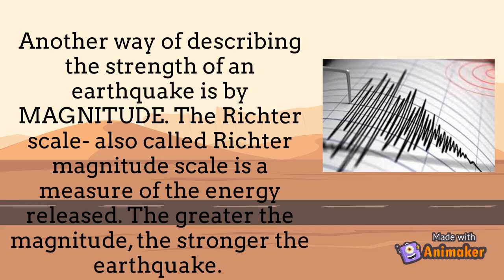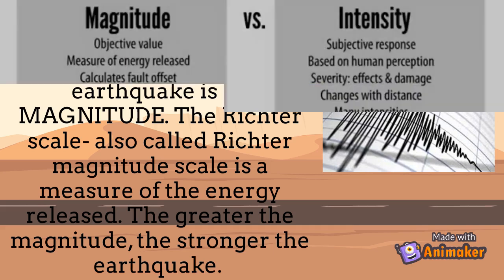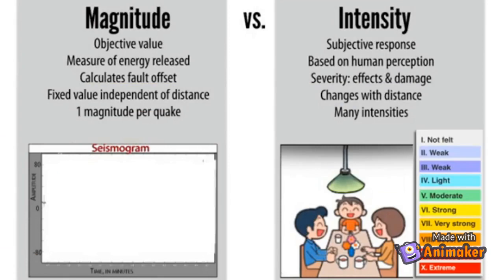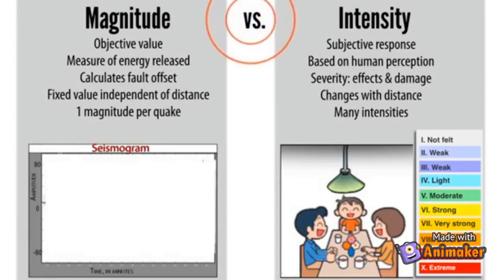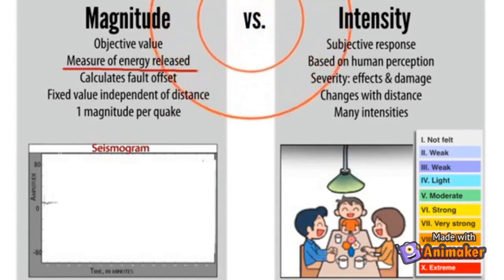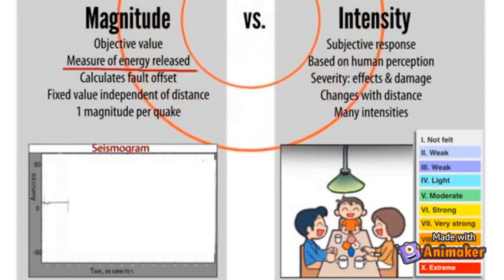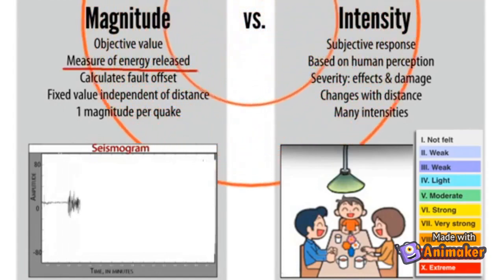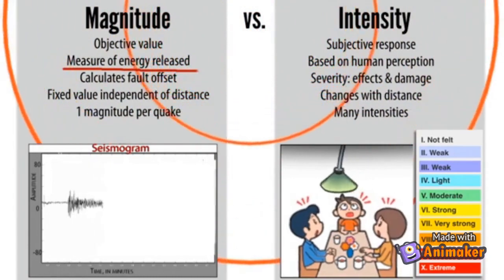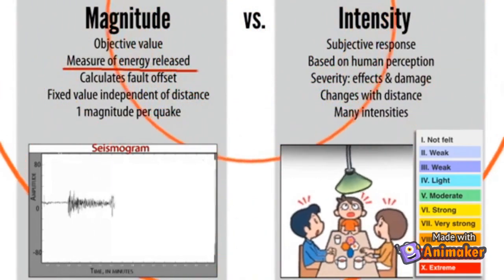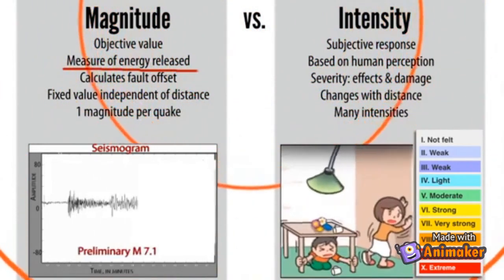To further understand intensity and magnitude, let's watch a video. Magnitude and intensity are both related to the size of an earthquake, but they each measure different aspects. Magnitude measures the energy released at the source of the earthquake rupture and is calculated using measurements from seismic instruments; it is one single value.